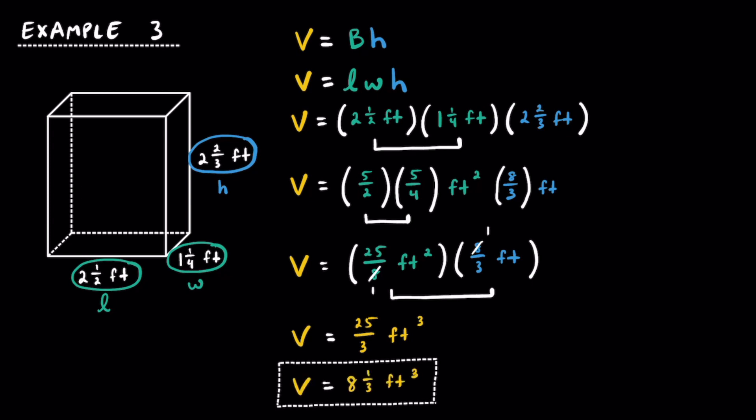While we can fit 8 whole 1 foot by 1 foot by 1 foot cubes into this rectangular prism, we can't quite fit a ninth one, but we can fit 1 third of a cube into this rectangular prism, in addition to the 8 whole ones that did fit. And there you have three different examples of how to find the volume of different rectangular prisms given whole number side lengths, decimal side lengths, and fractional side lengths.